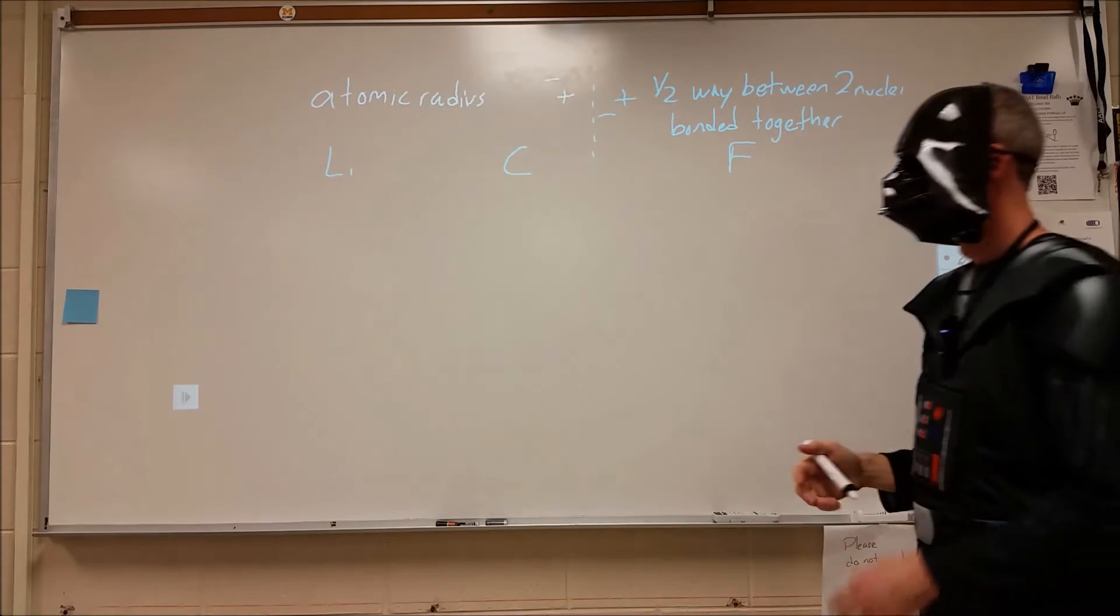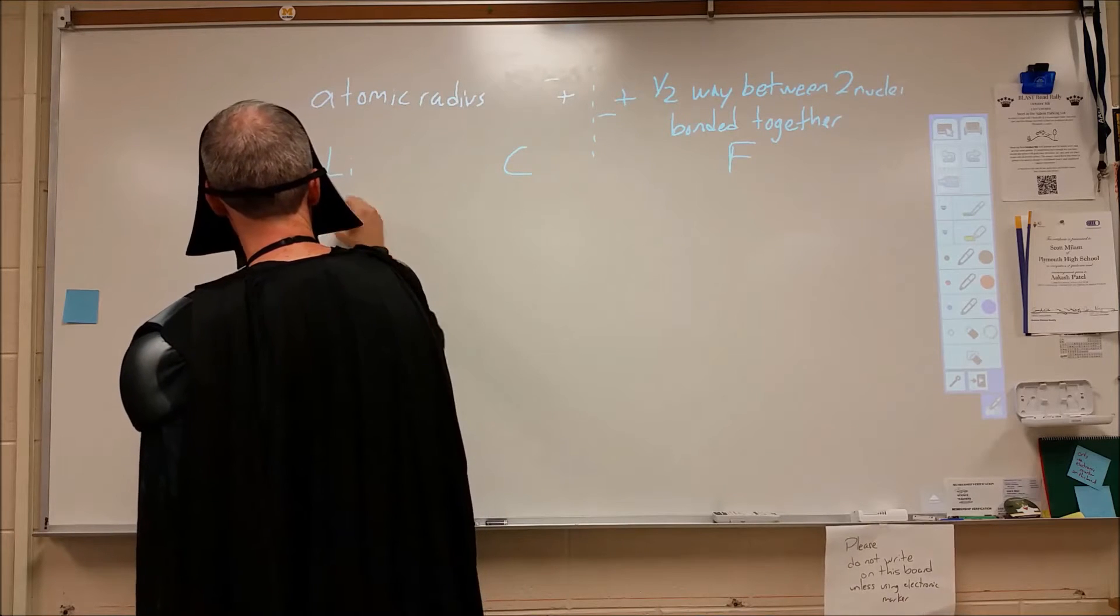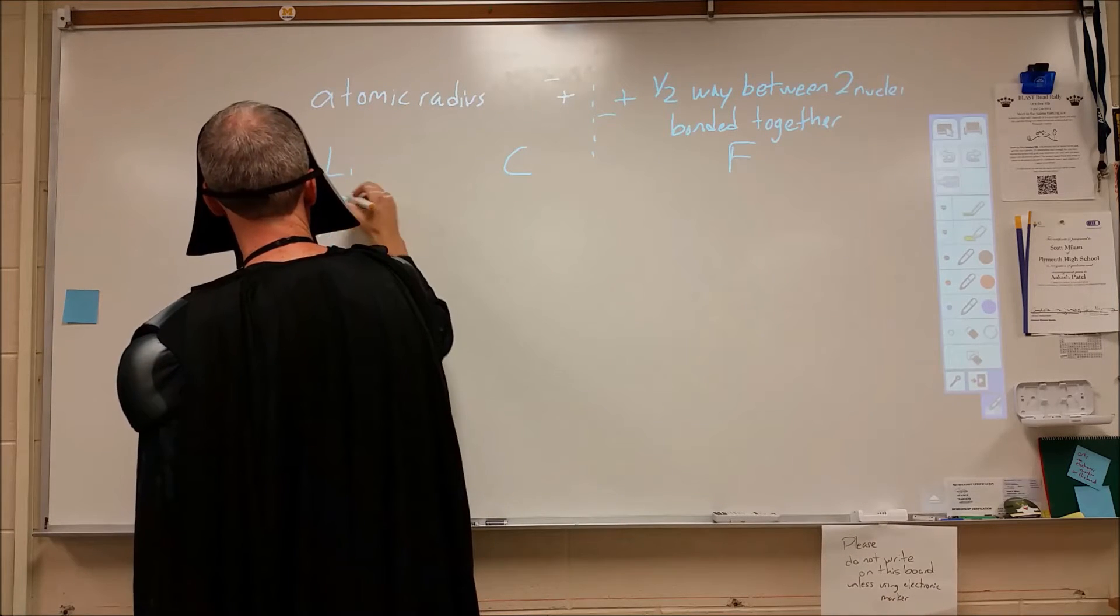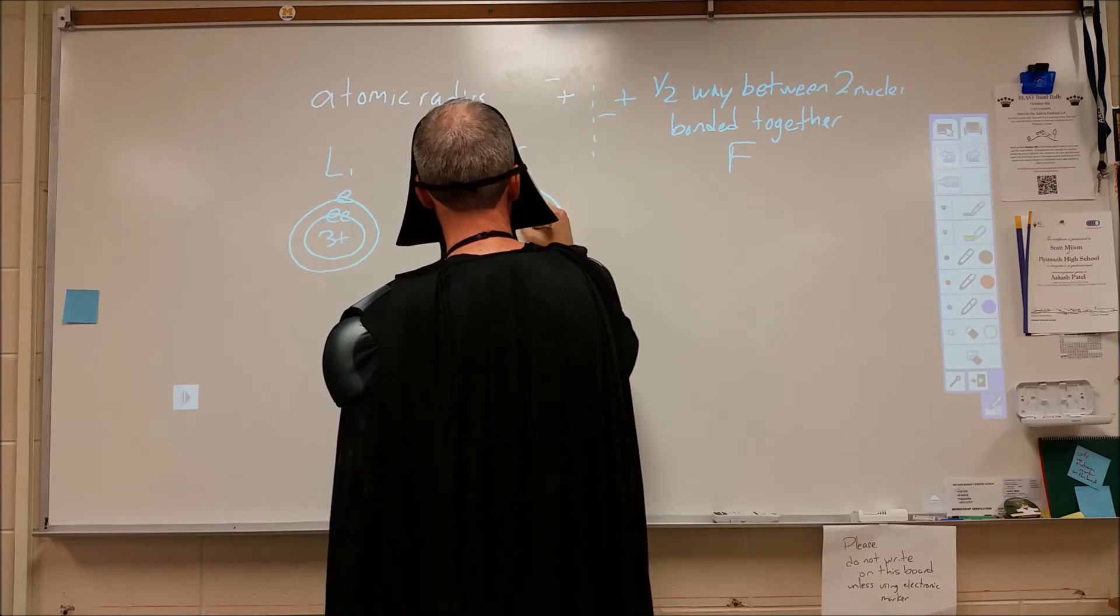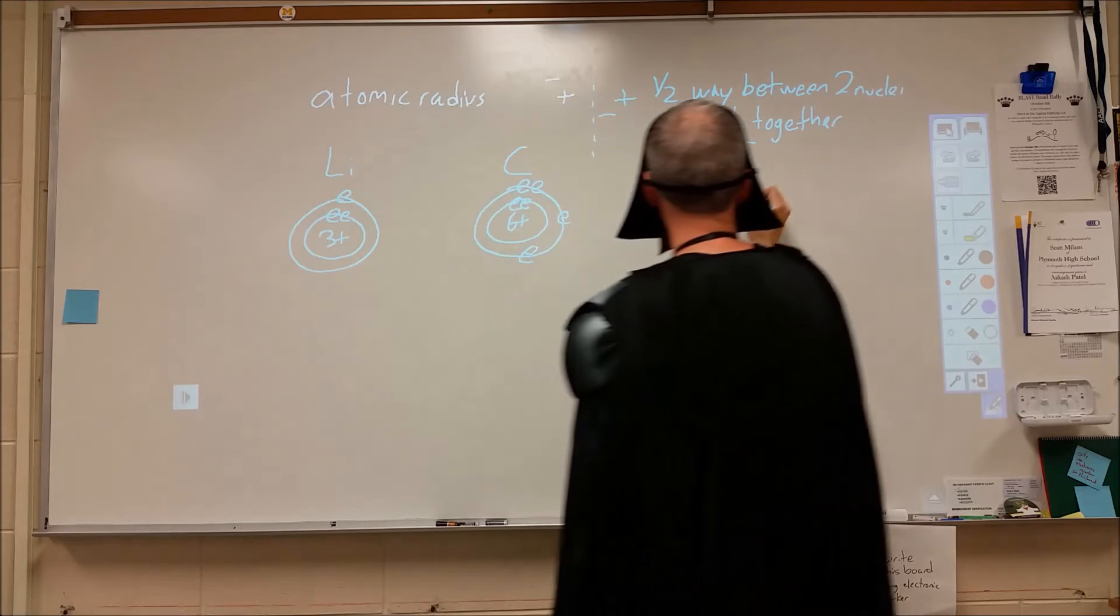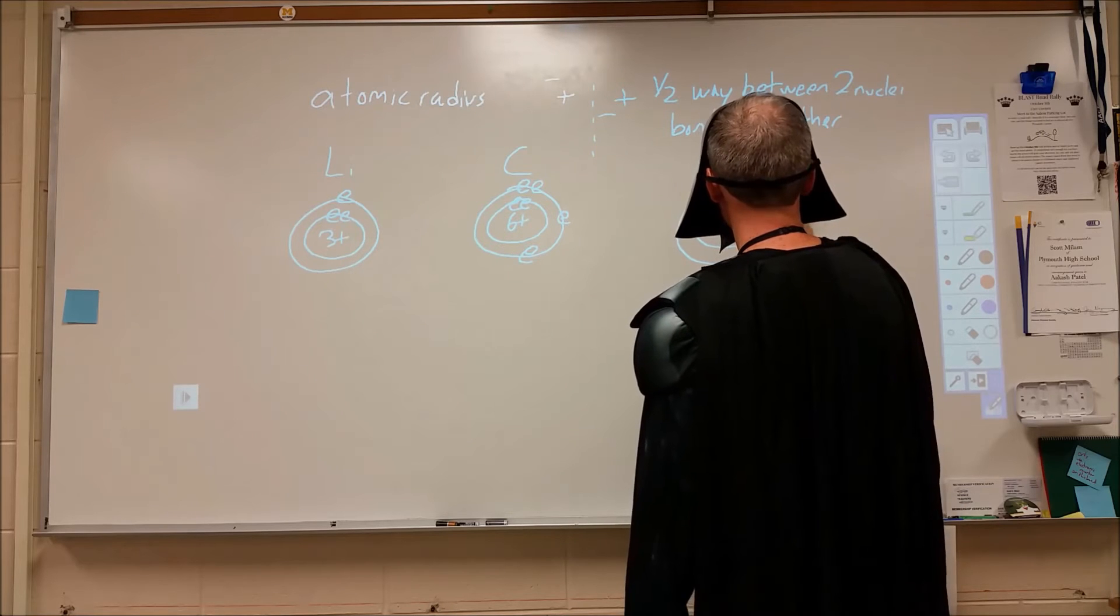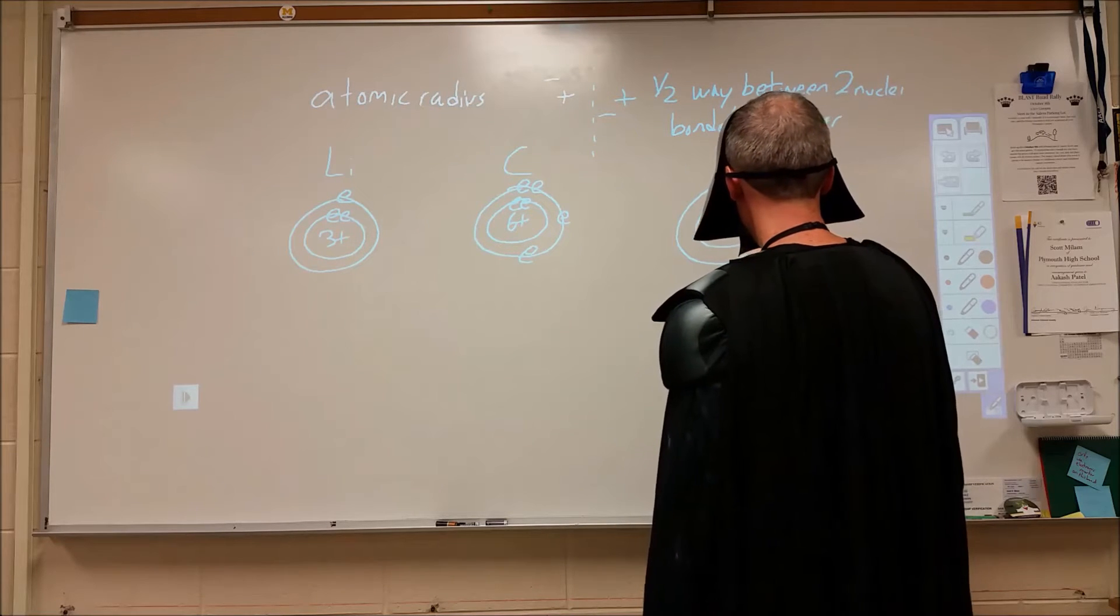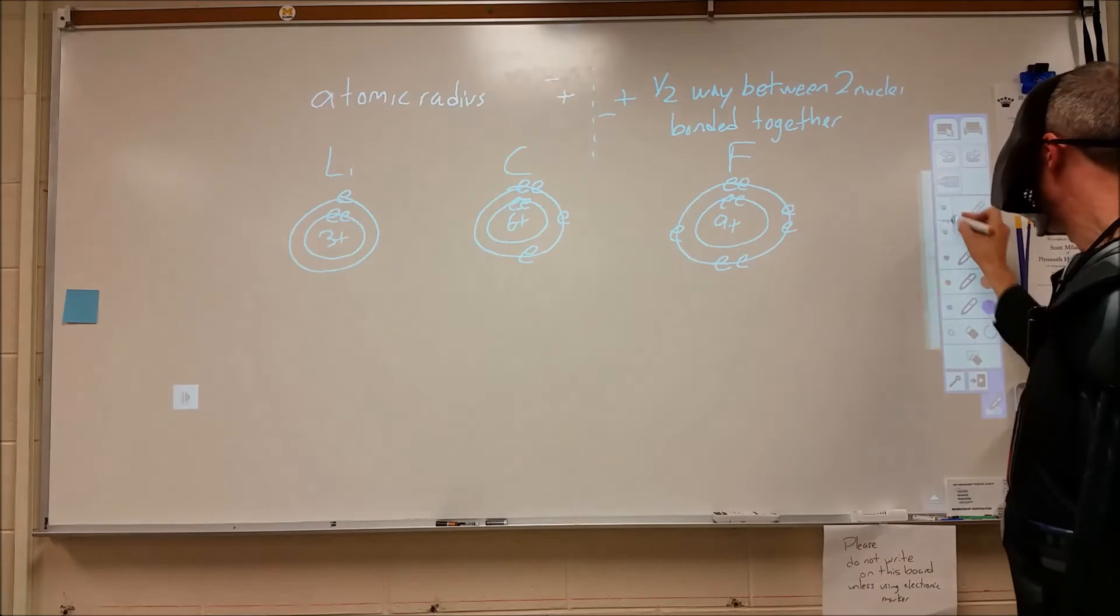Lithium is 3 protons and 3 electrons, carbon is 6 protons and 6 electrons, and fluorine is 9 protons and 9 electrons. We want to boil this down to very simple positive and negative charges attracting and repelling one another.